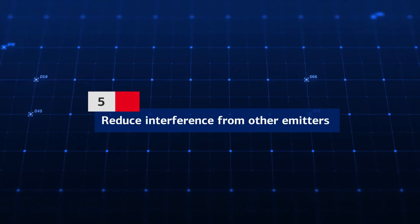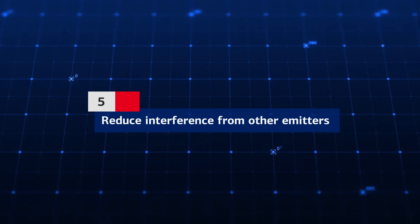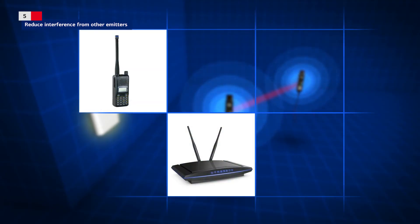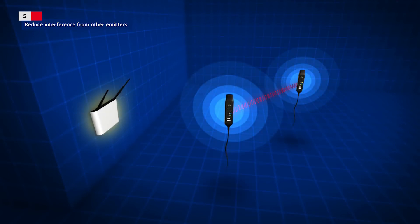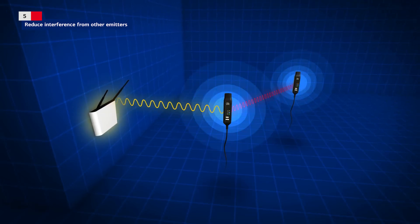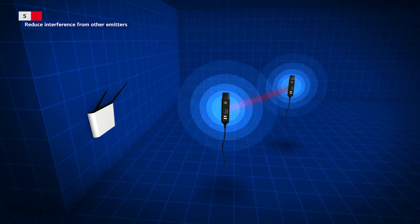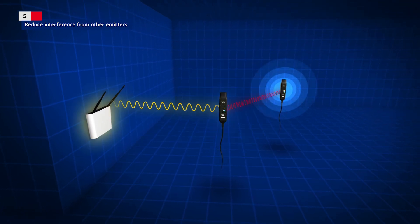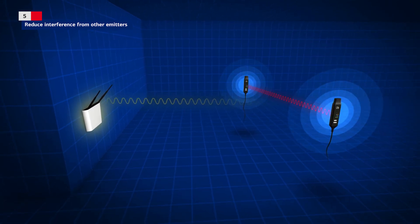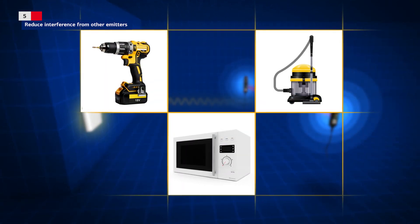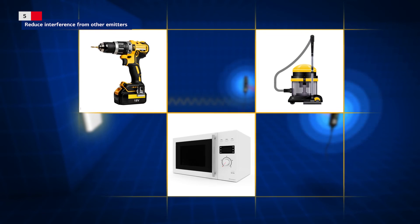Rule 5: Reduce interference from other emitters. Other equipment that uses the 2.4 GHz band should not normally interfere with AirBridge. Should you have doubts, you could try temporarily turning them off, or try to place the AirBridge unit further away from the suspected source of interference. Note that microwave ovens and motors may also emit energy that interferes with radio devices.